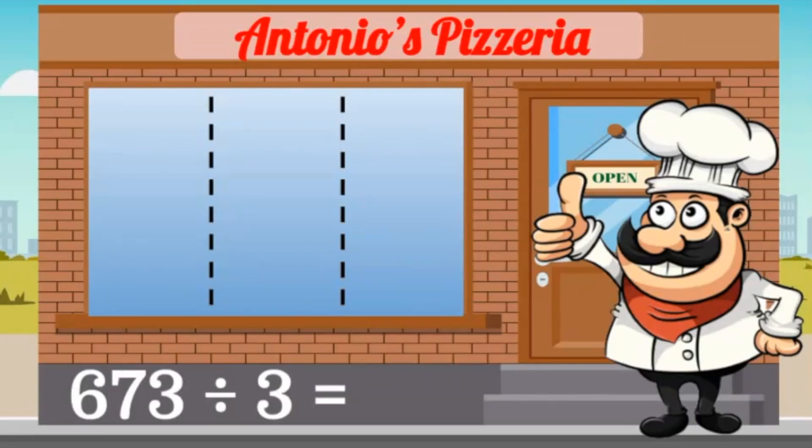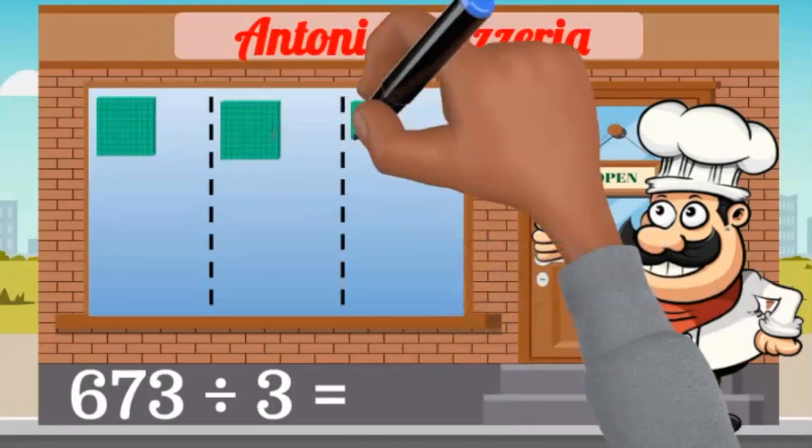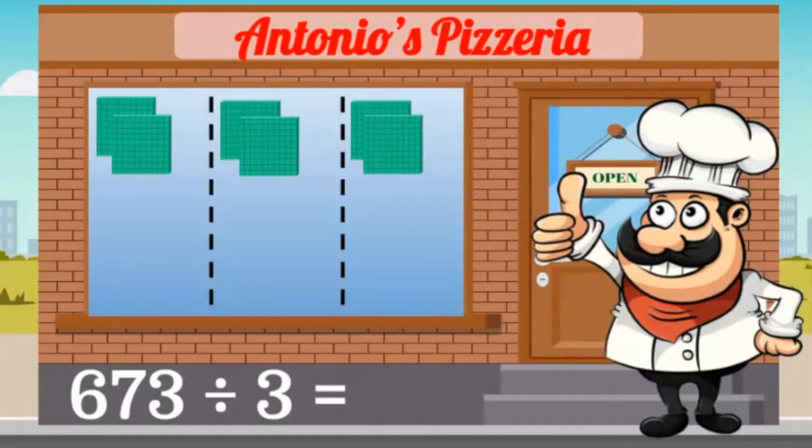I divided my window into 3 sections. In the number 673, there are 6 hundreds to divide into 3 groups: 1, 2, 3, 4, 5, 6.